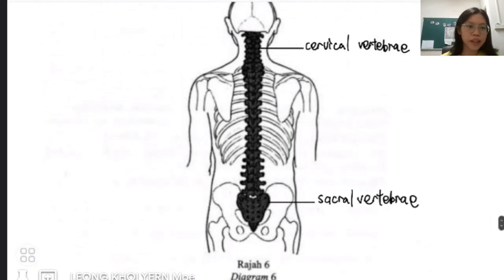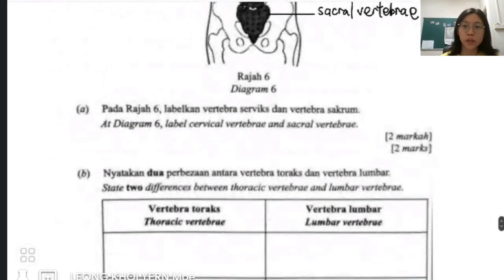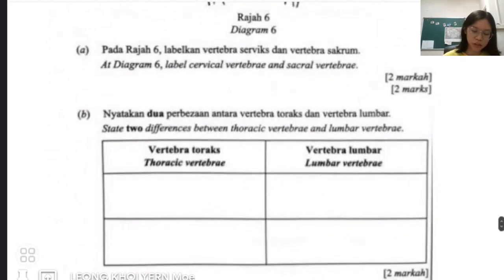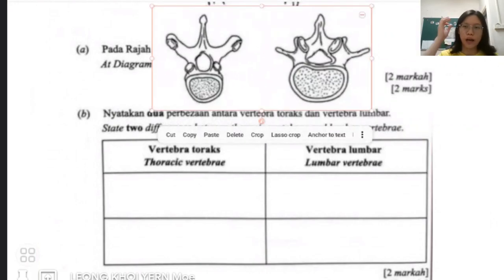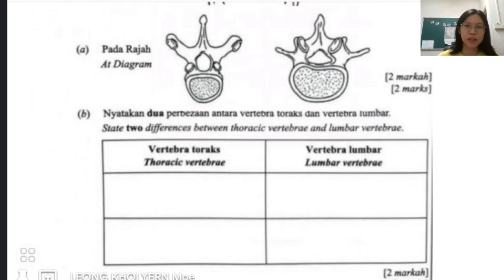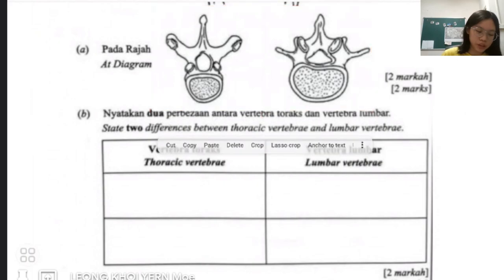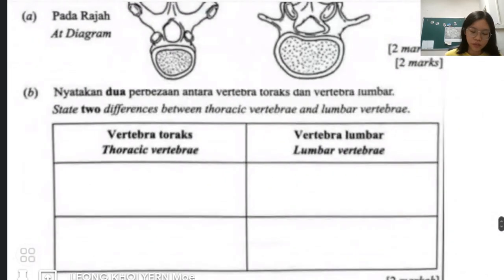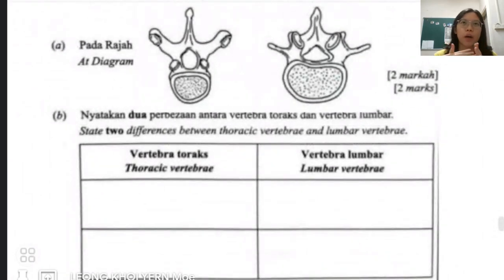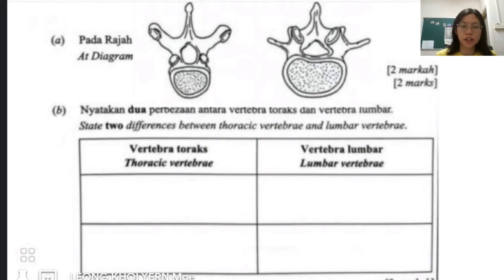They also want you to differentiate between thoracic vertebrae and lumbar vertebrae. You probably need to have a clear picture in mind since the exam may not give you a diagram. For thoracic vertebrae, it is the site where most muscles and ligaments are attached, so it has a longer spinous process and longer transverse process compared to lumbar.